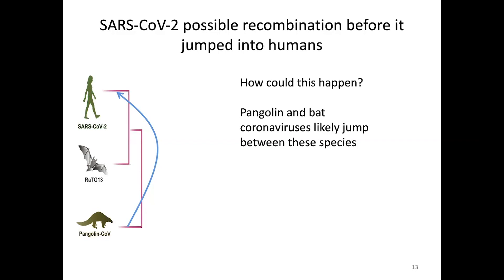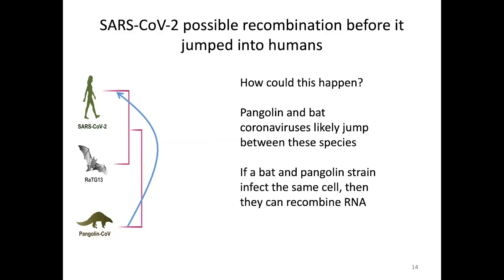It's possible and probably likely that there are lots of strains of coronavirus circulating between pangolins and bats and maybe other animals. Even if they have a preference for bats or pangolins, there's sometimes an opportunity for one species to get infected by both the bat strain and the pangolin strain simultaneously. If that happens and two different strains infect the same cell at the same time, you can get RNA recombining with each other.